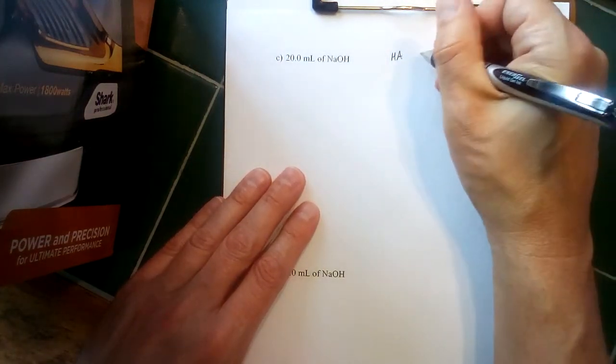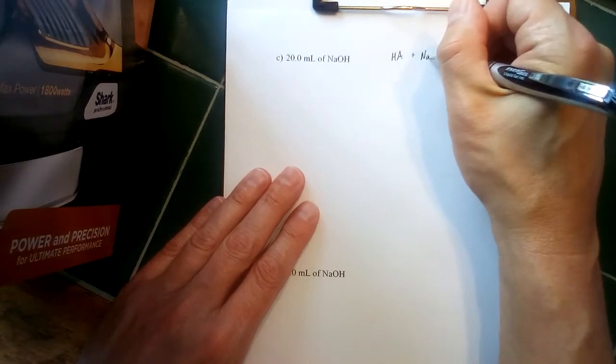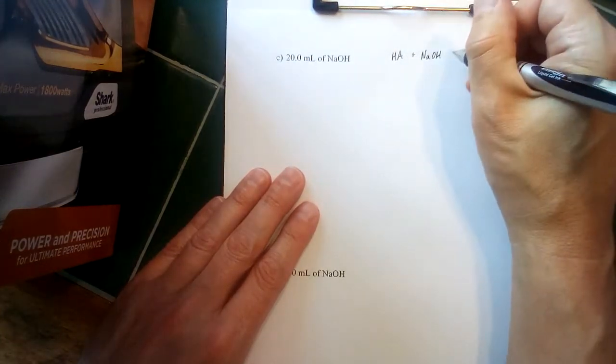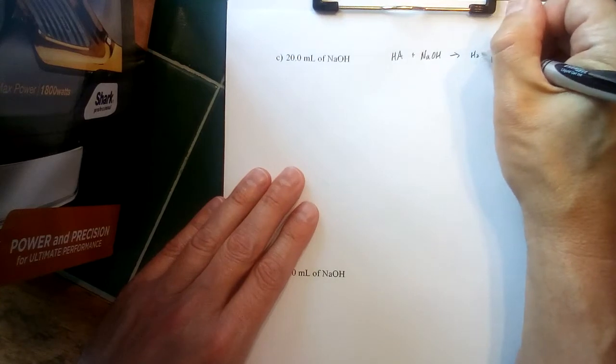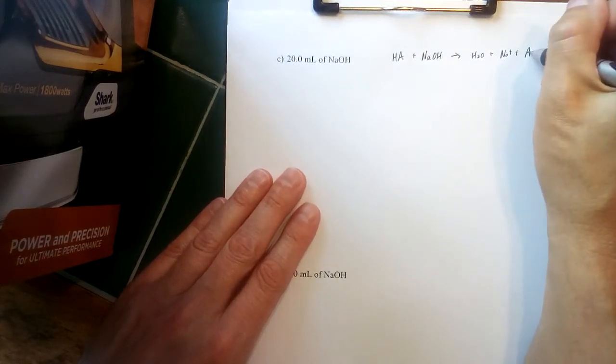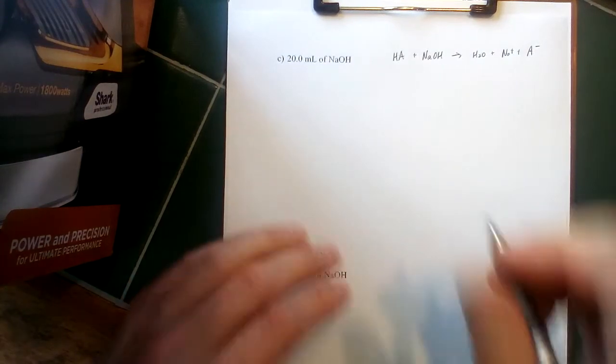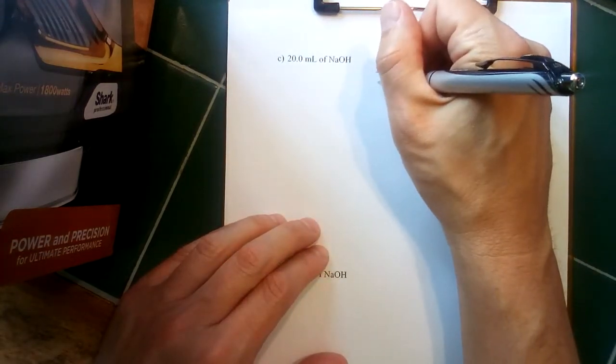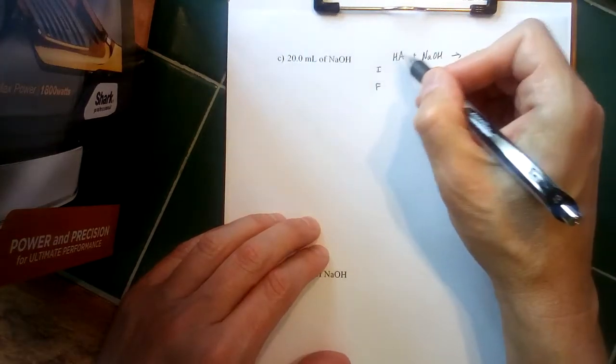So our benzoic acid plus sodium hydroxide making water and sodium cations, and most importantly for the next step, the conjugate base.